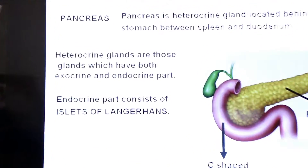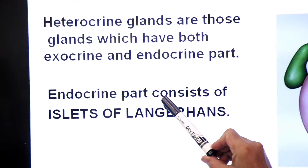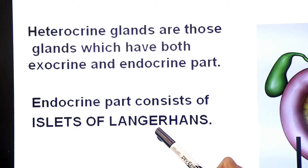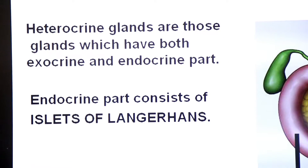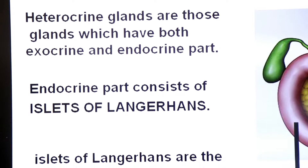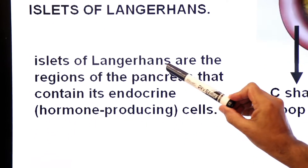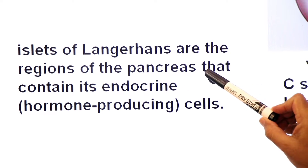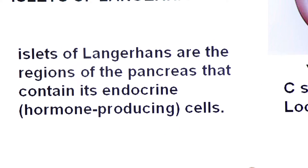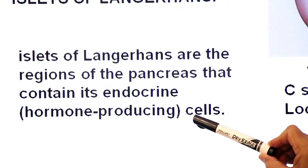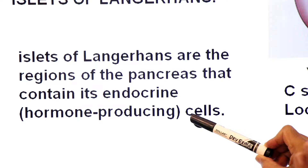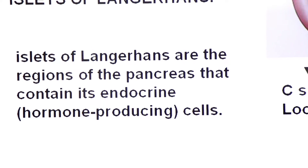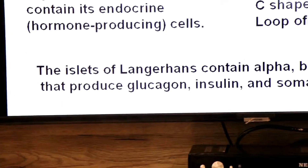The endocrine part of the pancreas consists of Islets of Langerhans. Islets of Langerhans are the regions of the pancreas that contain its endocrine hormone-producing cells. Yaad rakhiyega, yeh part ductless hai aur ismein jo cells paye jaate hain, woh hormone produce karte hain.